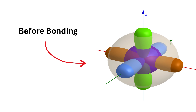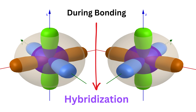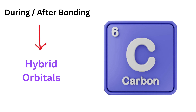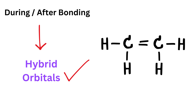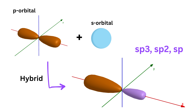Before bonding, each atom has orbitals — s and p — with fixed shapes and energies. But when another atom comes close and bonding is about to happen, the atom's electrons feel the presence of the approaching partner. At that moment, the energies of the s and p orbitals adjust, and it becomes more favorable energy-wise to mix them into new orbitals pointing exactly toward the incoming atom. These hybrid orbitals exist only when bonding is about to occur or while the atom is bonded — not in the free, isolated atom. That's why, for example, a free carbon atom doesn't have hybrid orbitals, but when carbon starts forming bonds like in methane, ethene, or ethane, its s and p orbitals mix into sp3, sp2, or sp hybrids depending on how many bonds it's forming.